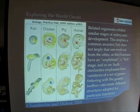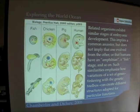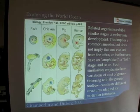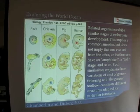We can also look at stages of development. Here we have a fish, a chicken, a pig, and a human. What we see in these stages of development are very similar kinds of things, like development of the eye spot at different stages and development of a tail.